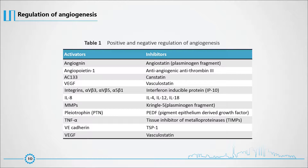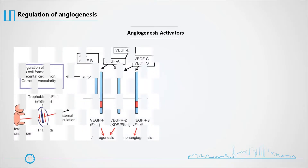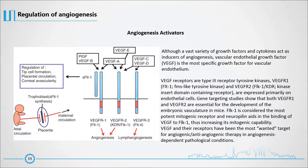These factors are commonly used as targets and strategies to manipulate angiogenesis. Although a vast variety of growth factors and cytokines act as inducers of angiogenesis, vascular endothelial growth factor (VEGF) is the most specific growth factor for vascular endothelium. VEGF receptors are type 3 receptor tyrosine kinases. VEGF1 and VEGF2 are expressed primarily on endothelial cells and are essential for the development of the embryonic vasculature in mice. VEGF2 is considered the most potent mitogenic receptor, and neuropilins aid in the binding of VEGF, thus increasing its mitogenic capability. VEGF and their receptors have been the most targeted for angiogenic/anti-angiogenic therapy in angiogenesis-dependent pathological conditions.